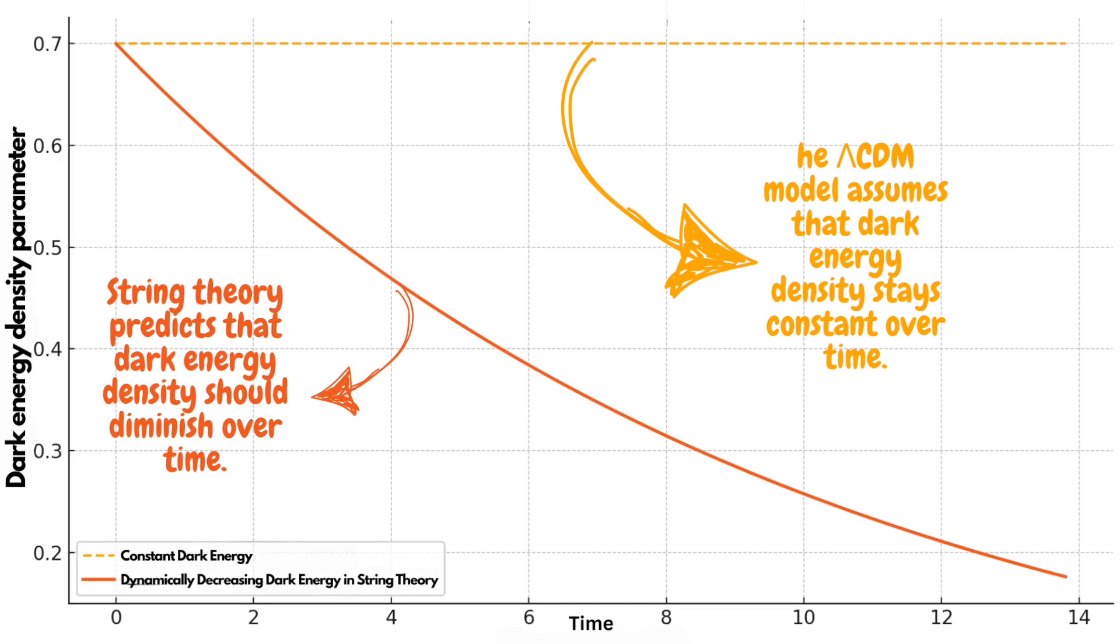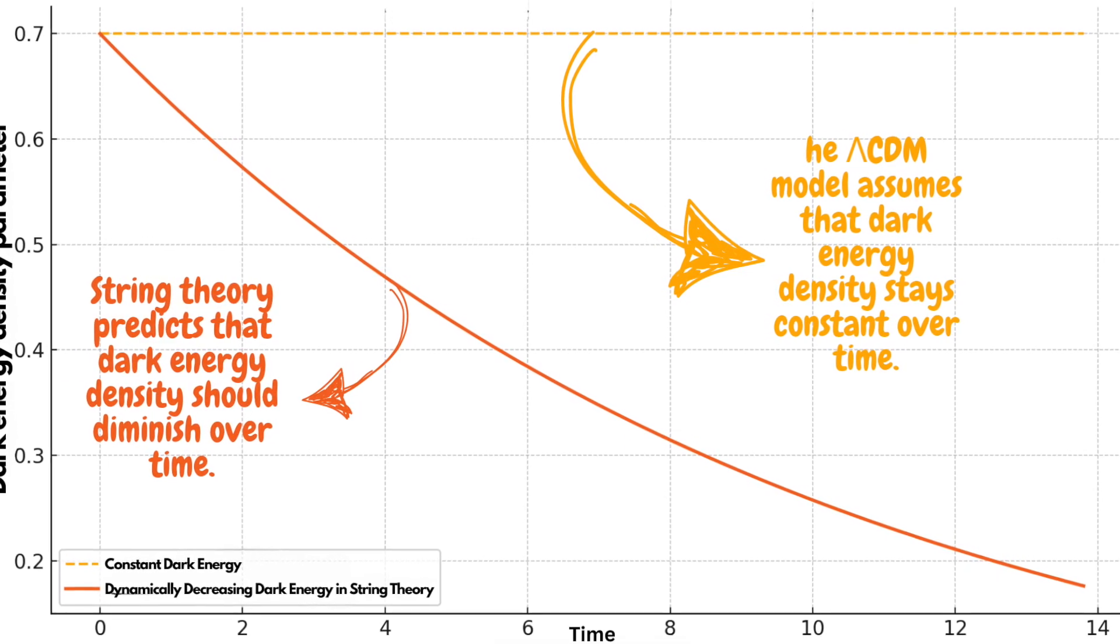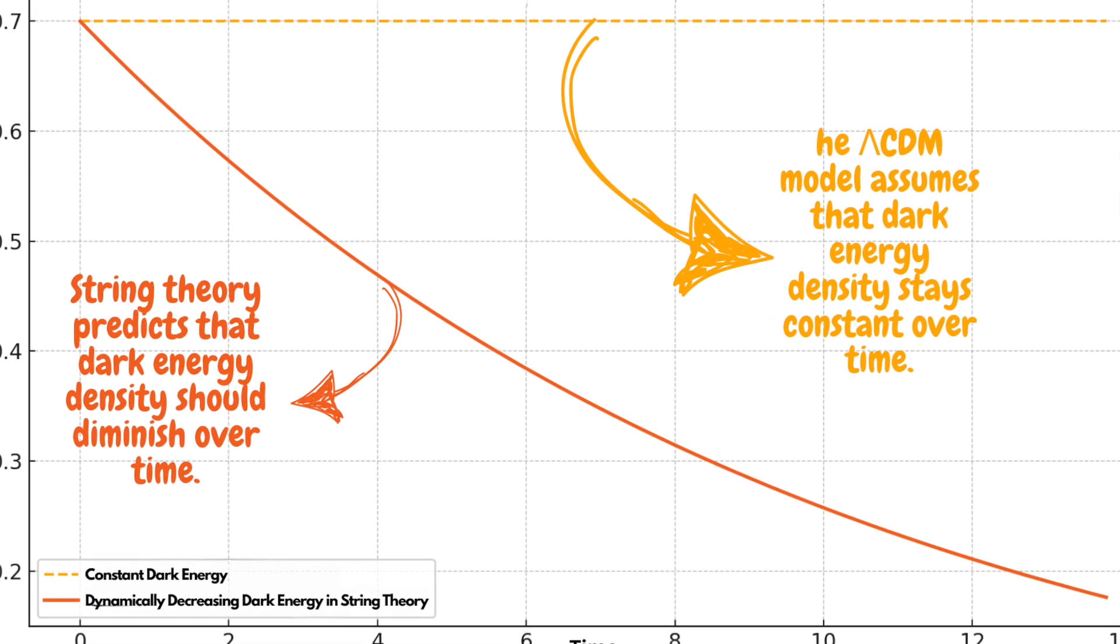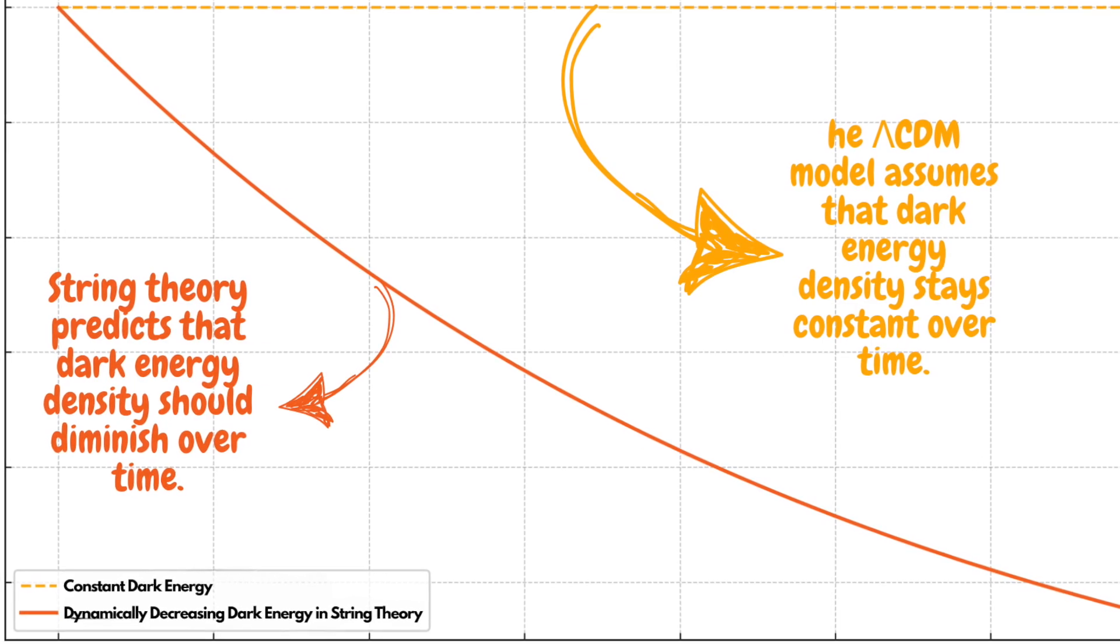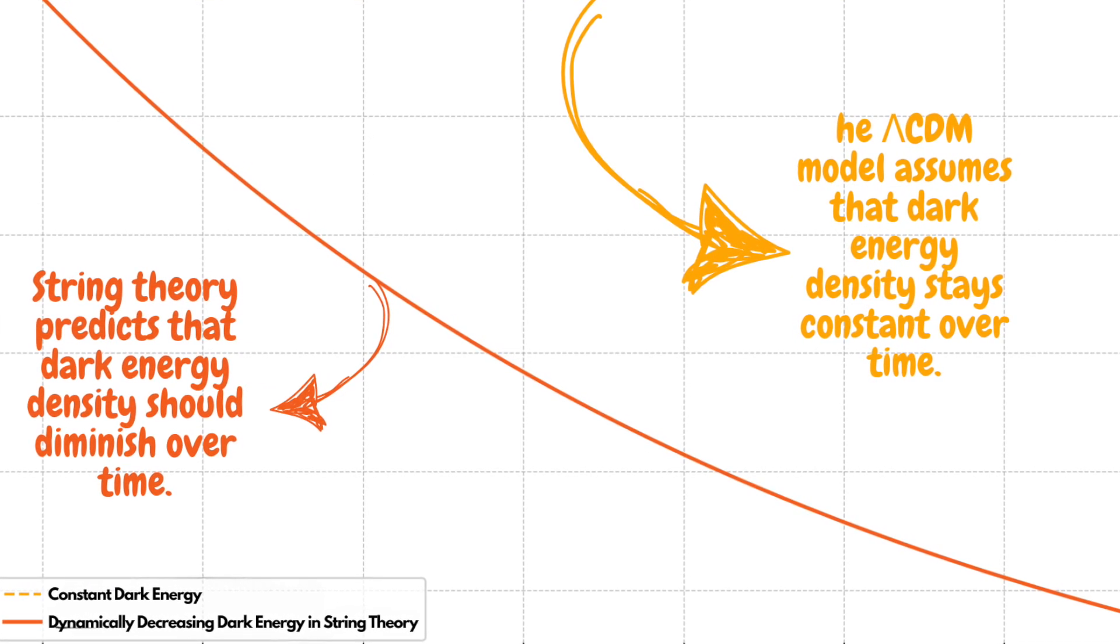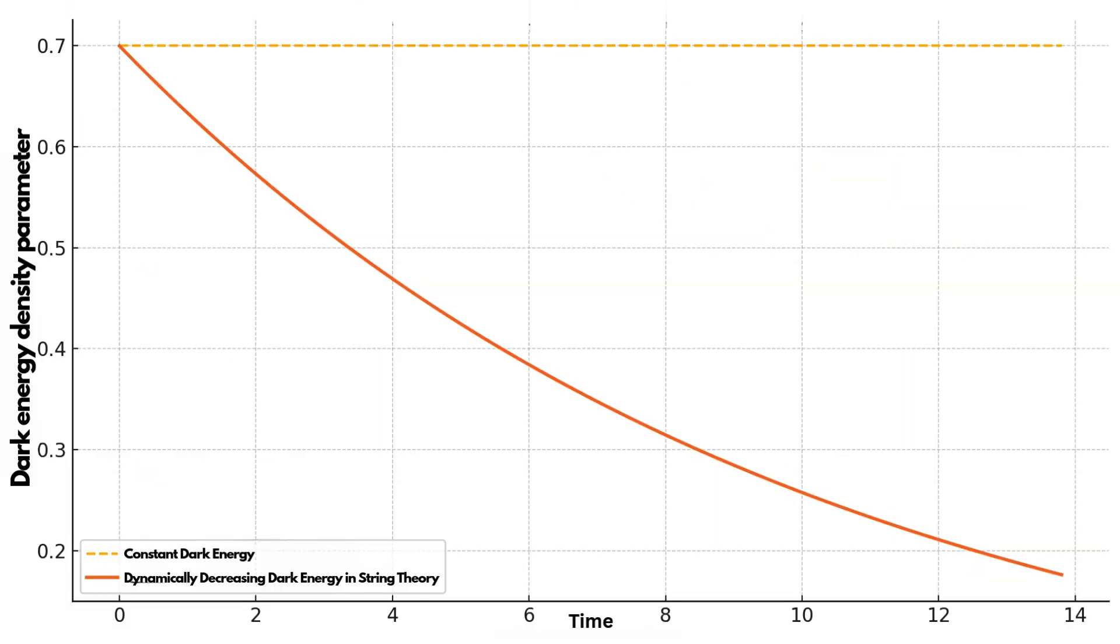In other words, the acceleration of the universe's expansion seems to be slowing down over time. This finding raises the possibility that dark energy, thought to be responsible for this acceleration, might not be constant, but instead gradually changing and decreasing in density.